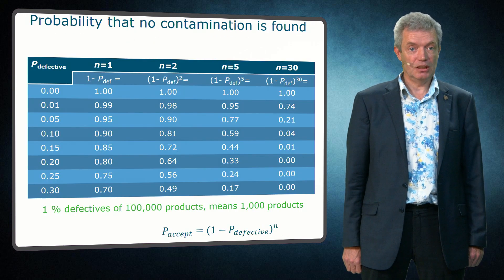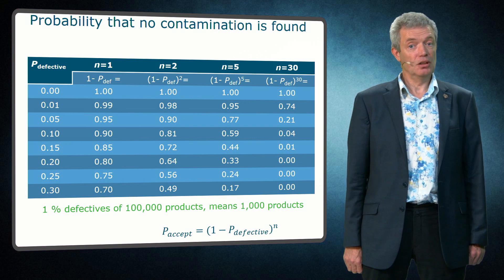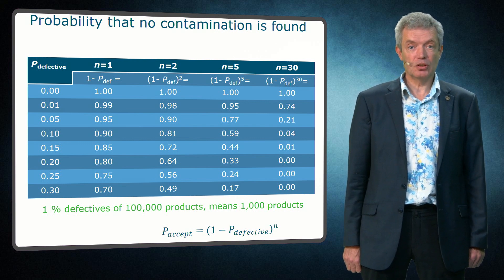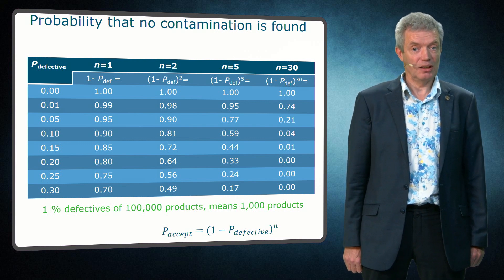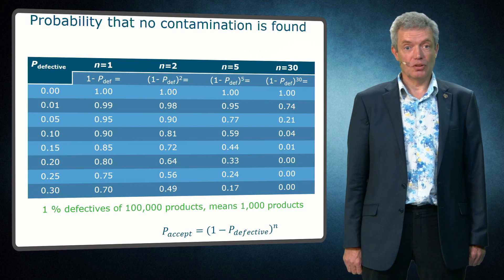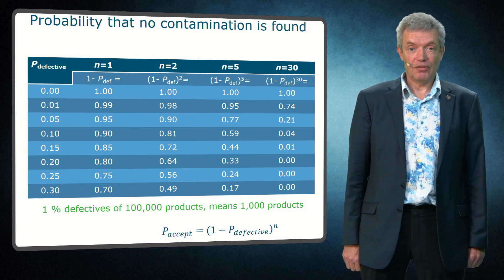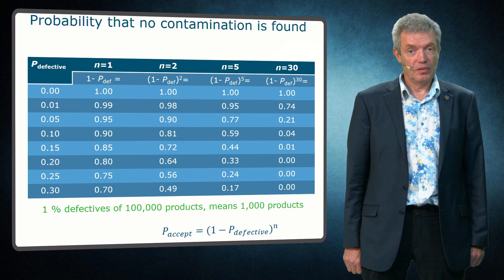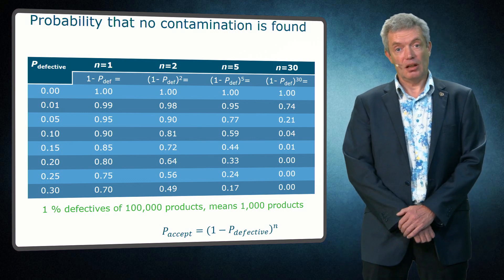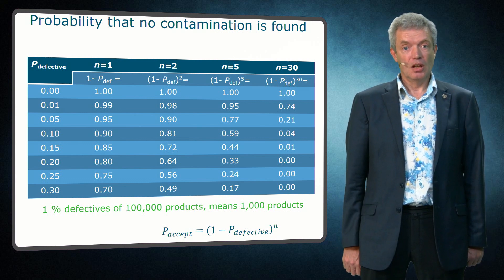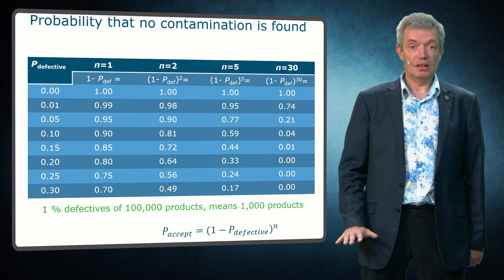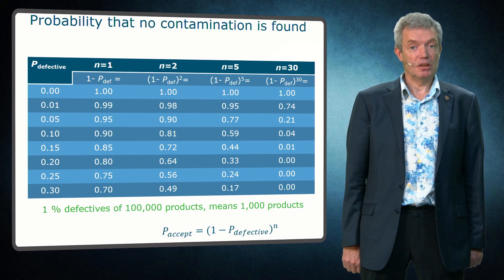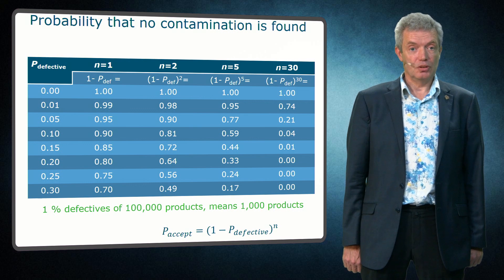For a homogeneous contamination we see here the probability to accept a batch for various numbers of samples and for various defective rates. With higher numbers of samples, batches with a higher defective rate are generally rejected. Batches free of the pathogen are accepted, so that's all good. But batches with a low defective rate have a high probability to be accepted, even with a large number of samples.